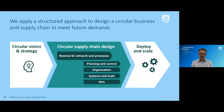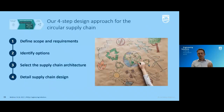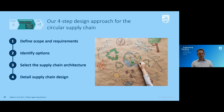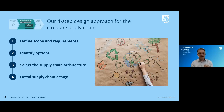Before going into the design elements, it's important to take four steps in the approach. Start from the scope and requirements, which are driven from the vision and strategy, and align those with leadership. Then identify the options — should we go local or global, insource or outsource? Based on those options and requirements, make a selection for how the future supply chain should look, bearing in mind the quantities foreseen for 2025 and beyond. Then further detail the supply chain design.